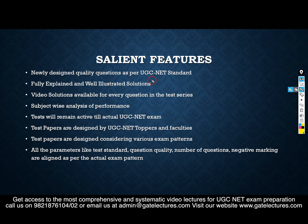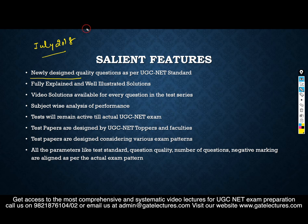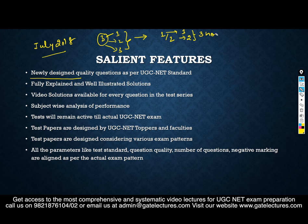The test series will be designed as per the latest pattern. For the July 2018 examination, UGCnet has changed the pattern. Initially there were three papers — paper 1, paper 2, and paper 3. Now there are only two papers: paper 1 of 1 hour and paper 2 of 2 hours, making the total examination 3 hours. The test series has been updated accordingly.